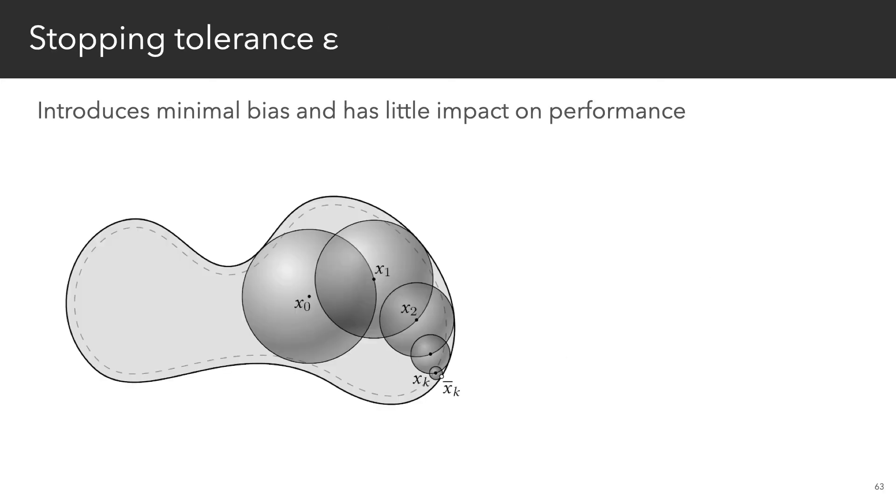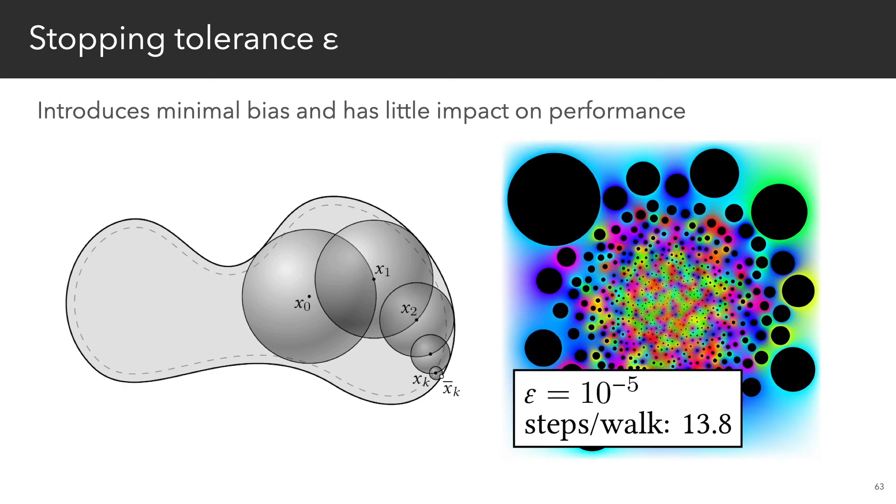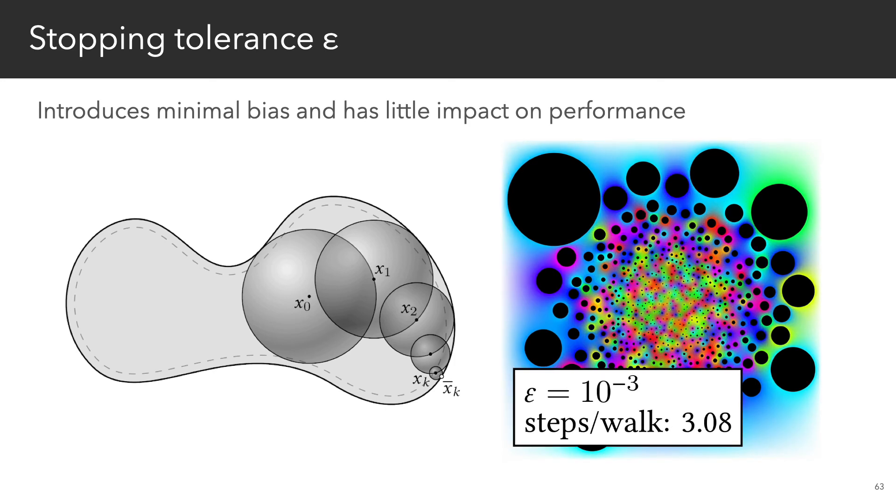Like standard walk-on spheres, the only parameter in our algorithm is an epsilon tolerance that indicates how close to the boundary you have to be before you can grab the known boundary value. This tolerance introduces minimal bias and has little impact on performance unlike tolerances in meshing algorithms.